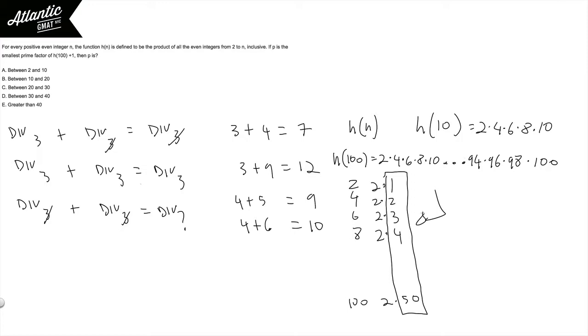Now let's combine this idea with this divisibility rule. So now we're taking h of 100 and adding 1 to it. h of 100 is divisible by all of these numbers from 1 to 50.